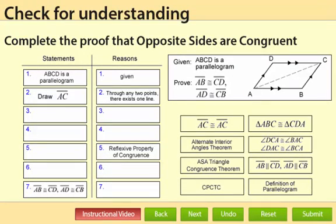Complete the proof that opposite sides are congruent. So here we are given parallelogram ABCD and we're going to prove that segments AB and CD are congruent and segments AD and BC are congruent.